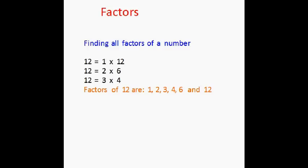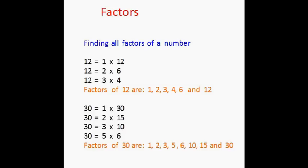Now how do we find all the factors of a given number? Let's try this with the number 12. So 12 can be written as 1 multiplied by 12, or 12 can be written as 2, 6 are 12, or 3, 4 are 12. So therefore all the factors of 12 are 1, 2, 3, 4, 6 and 12.